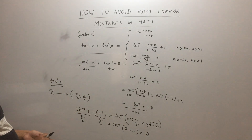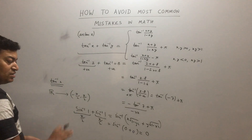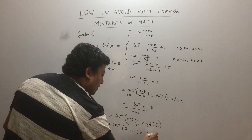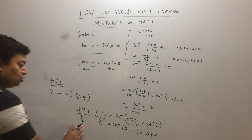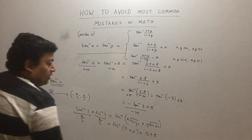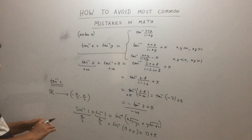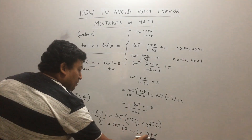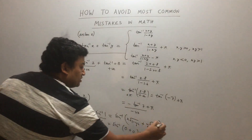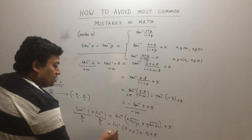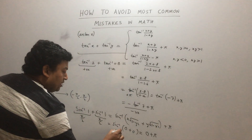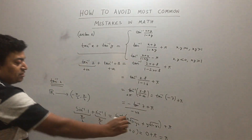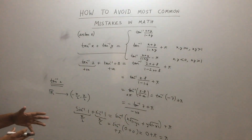We have to give the answer within the range. So in this case it will not be 0 — it will be 0 + π = π. You have to develop the formula accordingly based on the condition on xy, so the answer is π.